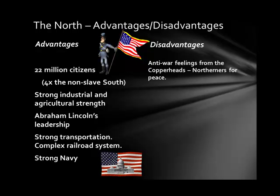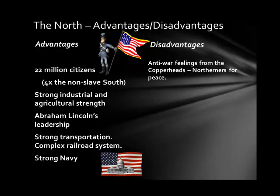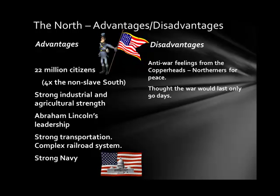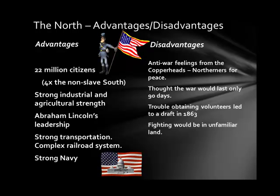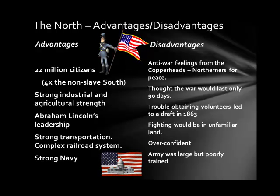Disadvantages for the North included Copperheads — people who called themselves Northerners for Peace but were actually Southern sympathizers who didn't want to abolish slavery because they profited from it. Another disadvantage was the belief the war would only last 90 days. By 1863, the North struggled to recruit volunteers and had to institute a draft, requiring men to fight whether they wanted to or not. Their fighting would also take place in unfamiliar territory in the South, and the Northern Army, though large, was very poorly trained and extremely overconfident.